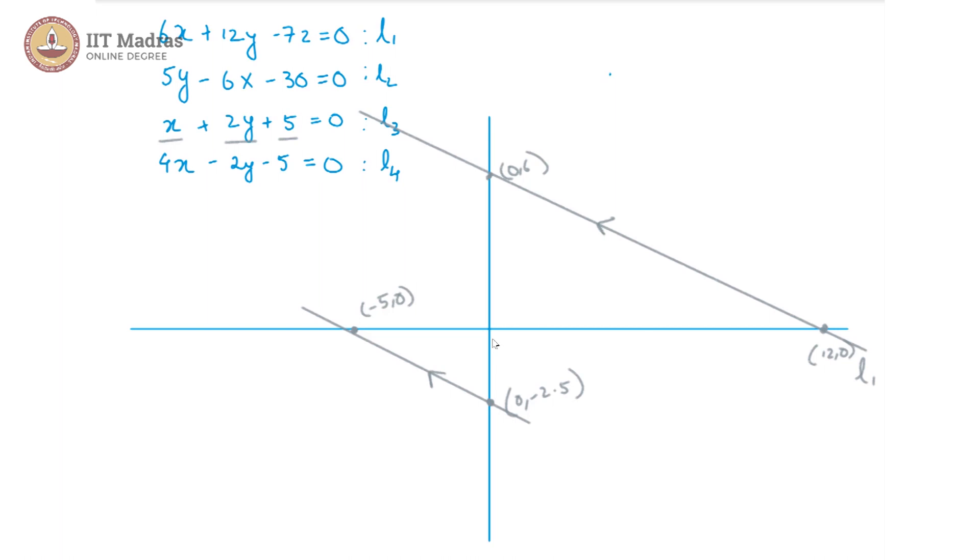Now L2, if we look into it with a similar logic, we can see that L2 can be reduced to y/6 - x/5 = 1. So in our intercept form we can now tell that if I made this plus, this becomes -5. So the x-intercept is -5 which is this point again, and y-intercept is 6. So that is this point. So L2 in fact passes through these two points. So this is our L2. This was L1, now this is L3 and this is L2.